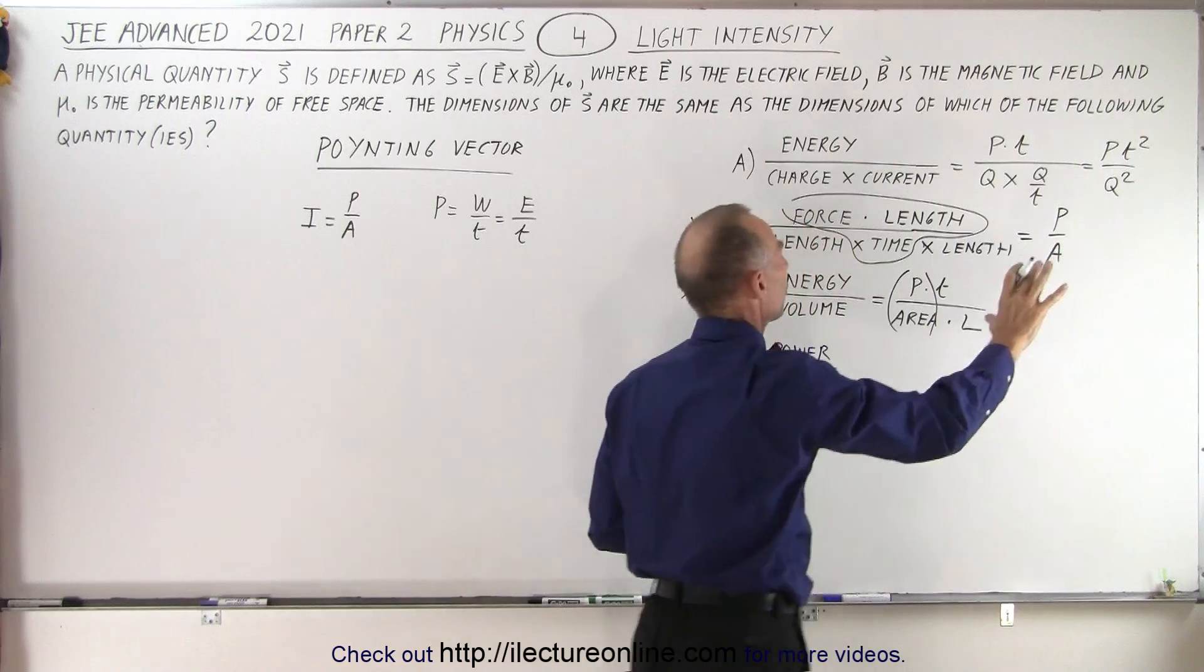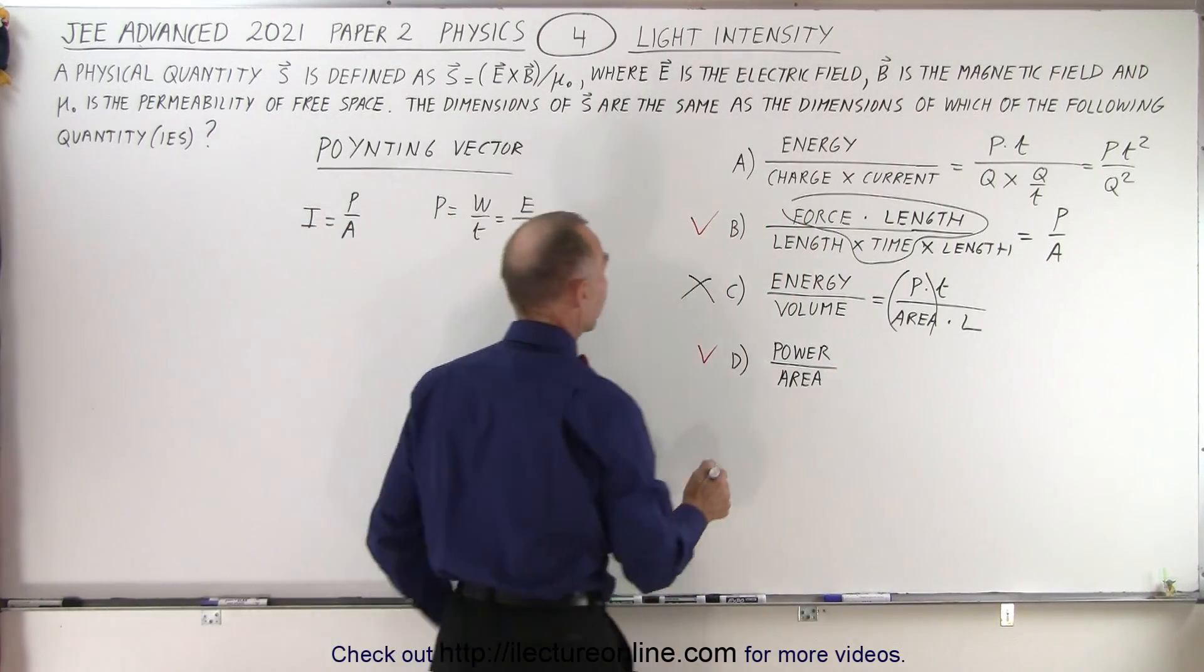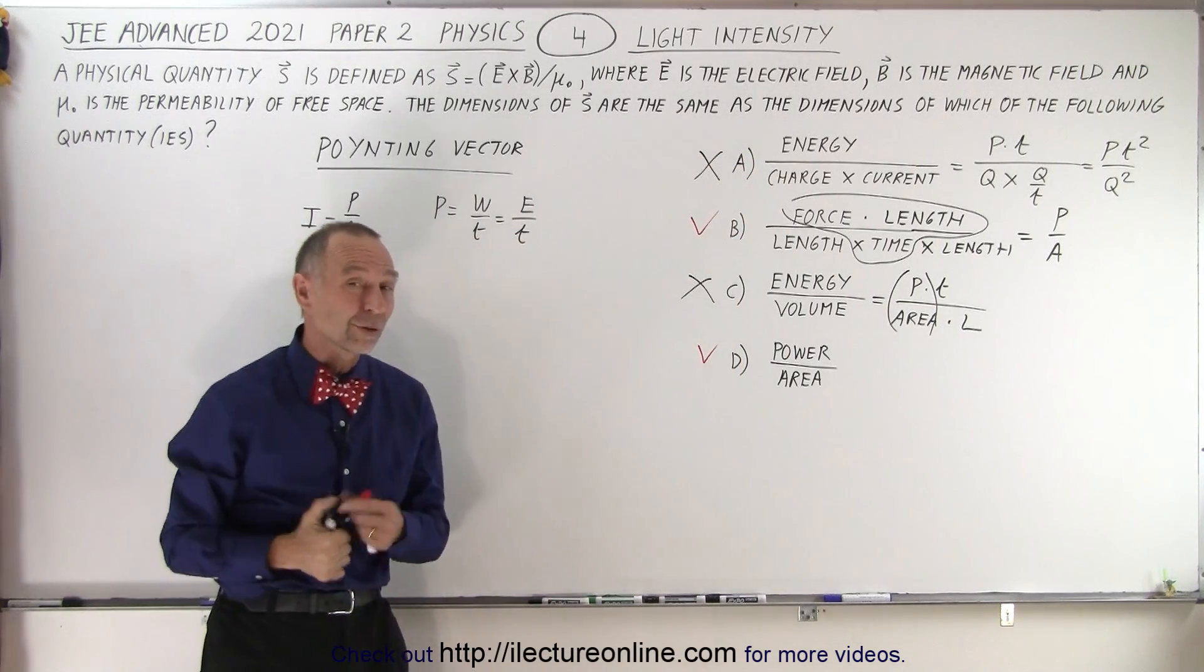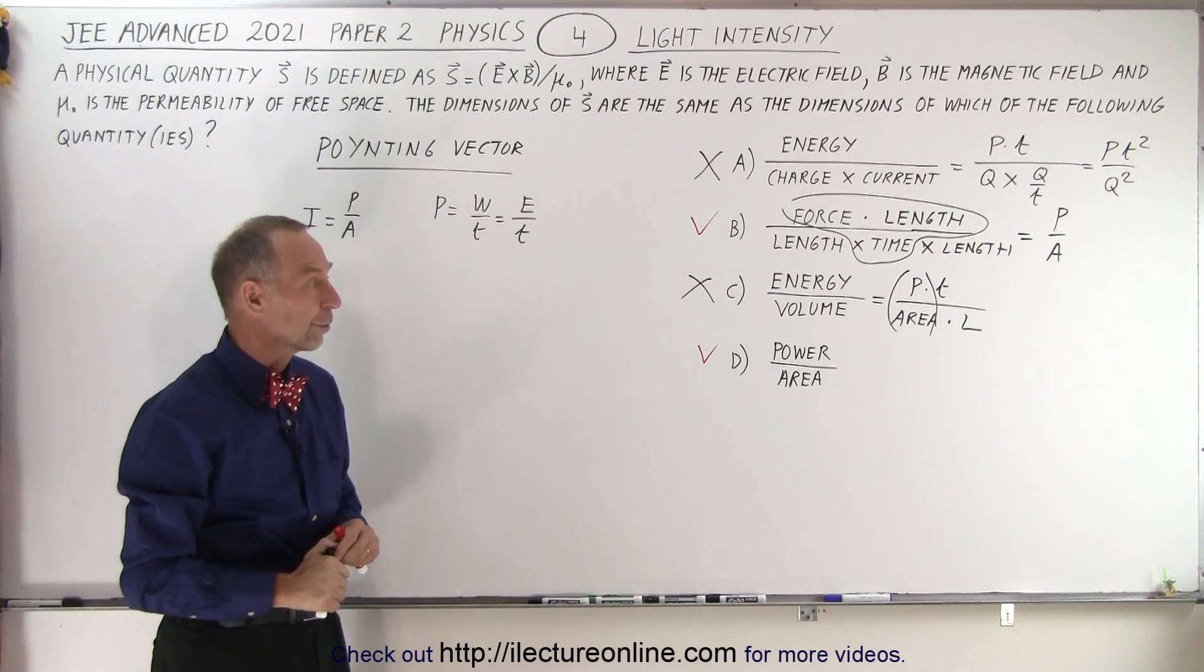So that would be equal to power times time squared over Q squared. And that is nowhere close to what I'm looking for, power over area. So therefore, A is also not a good combination, which leaves us with the two possible answers, B and D, where A and C are not what we're looking for.